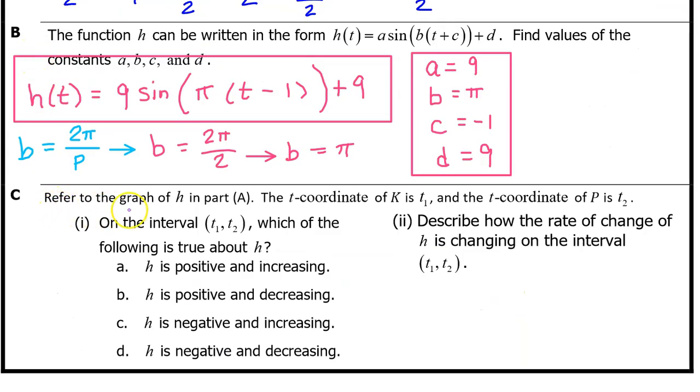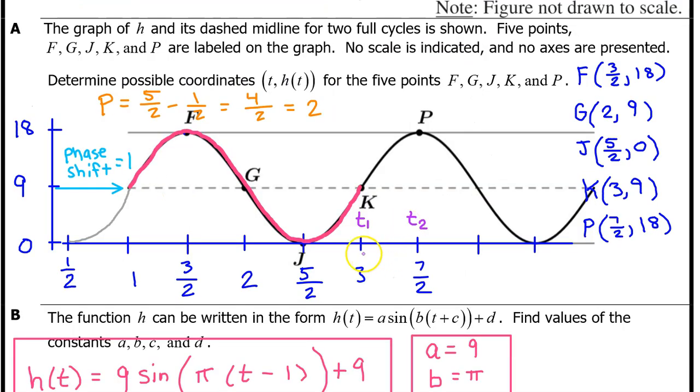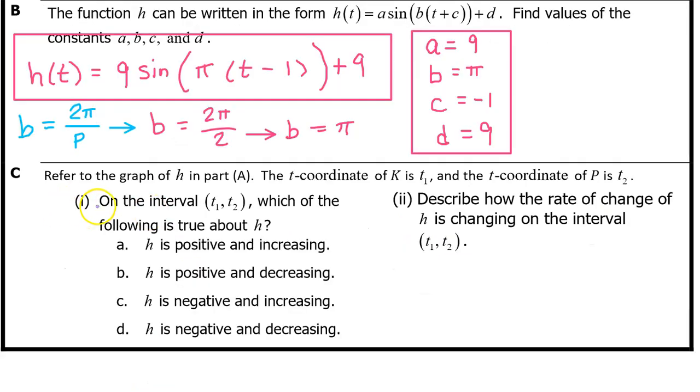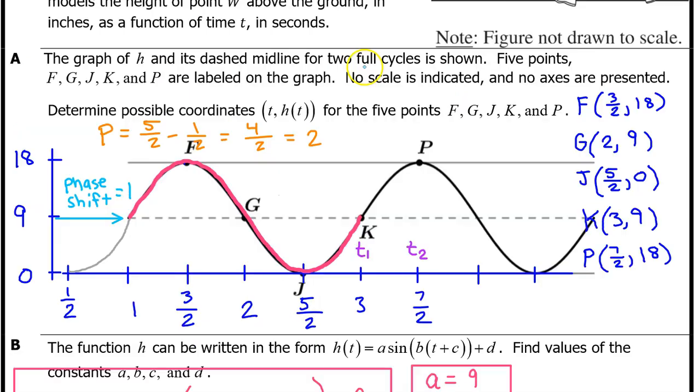Part C, refer to the graph of h in part A. The t-coordinate of k is t1, and the t-coordinate of p is t2. So, t1 is here, and t2 is here. See part 1. On the interval from t1 to t2, which of the following is true about h? Is h positive and increasing, positive and decreasing, negative and increasing, or negative and decreasing.